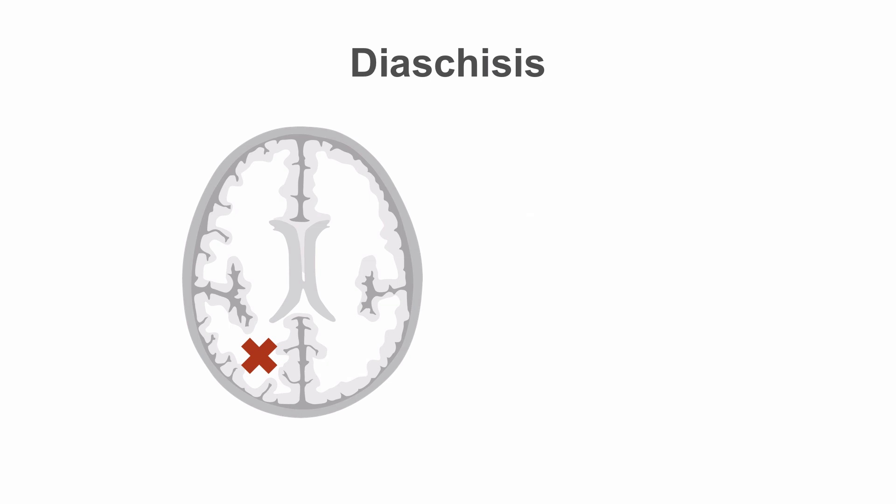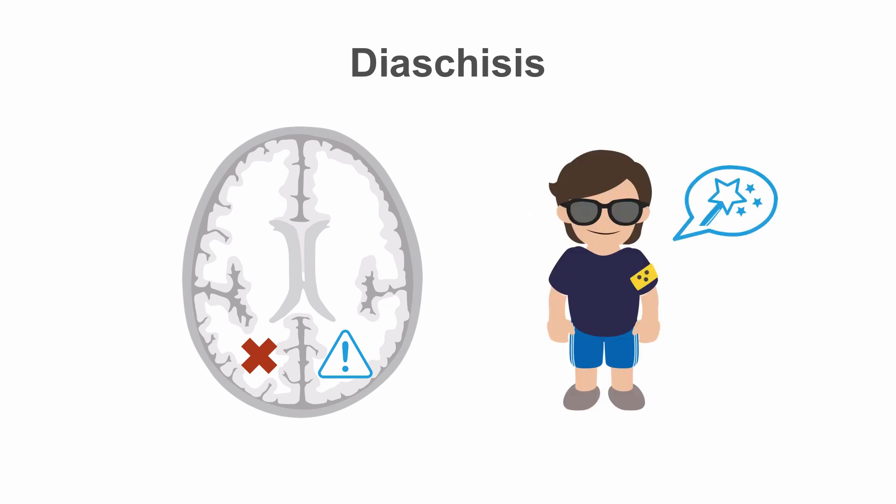This can also occur with lesions affecting one occipital pole, which can provoke brief physiologic functional abnormality in the opposite occipital cortex for a short period of time. This produces temporary cortical blindness and results in Anton's syndrome. However, this process will reverse spontaneously with time. This induced physiologic dysfunction is called diaschisis.